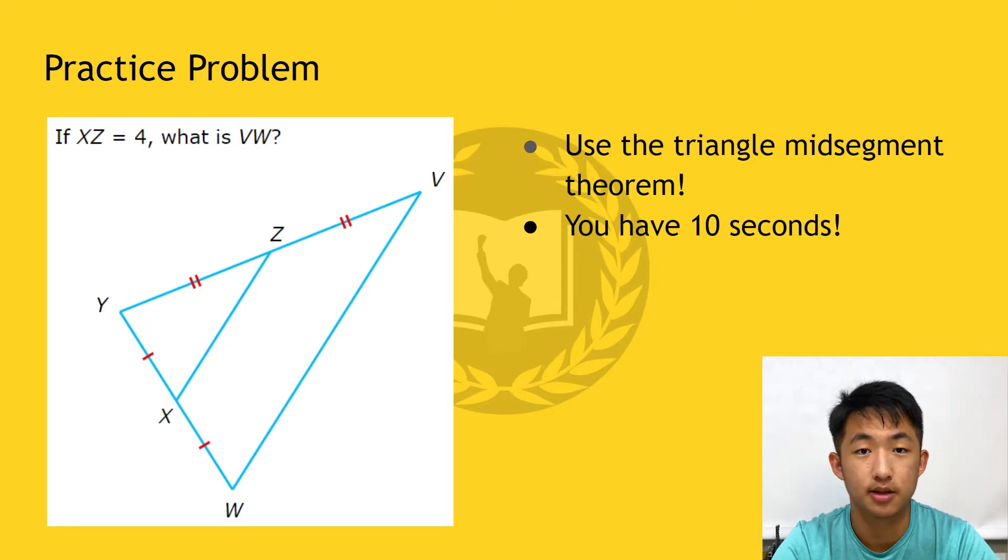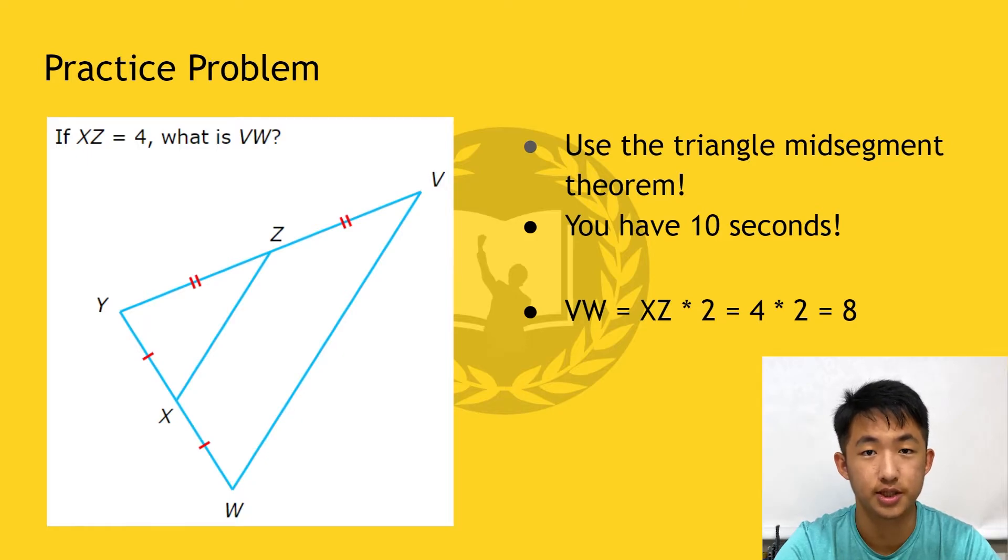Okay, now that time has elapsed, let's take a look at the solution. By the triangle midsegment theorem which we just learned about, the length of segment VW must be double that of segment XZ. Therefore, since XZ is 4, VW has a length of 4 times 2, which is 8.